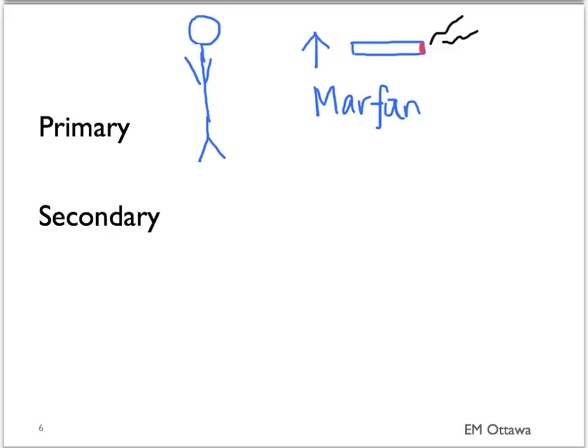Secondary spontaneous pneumothorax occurs in patients with lung problems. The most common ones are COPD and asthma. They can also occur in the settings of infections such as TB and PCP.